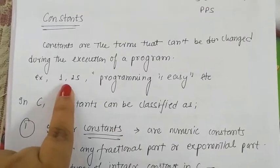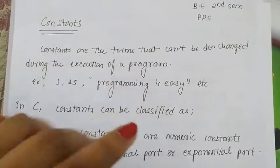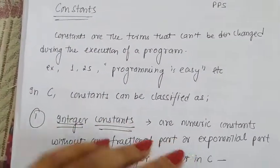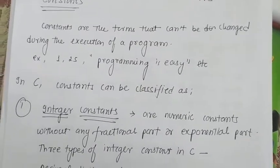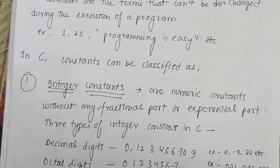For example, 1, 25, or "programming is easy" - whatever I have written as a constant will not change. If you talk about C language, let's see how constants are classified.